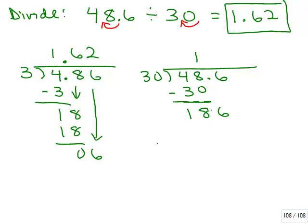Then you have to think, how many times does 30 go into 186? It goes in 6 times. So you have to do 6 times 30 is 180. You still have a remainder, so you have to put another 0 down to bring that, and then 30 goes into 60 twice.